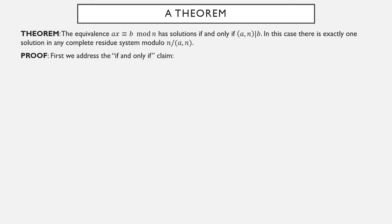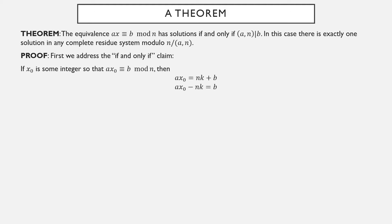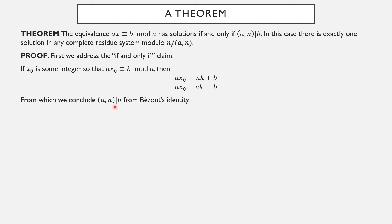Proof: let's address the if and only if claim. Suppose x₀ is some integer that solves the original equivalence. Then ax₀ ≡ b mod n, so it equals a multiple of n plus b. Subtracting to the other side gives a linear combination of a and n equal to b. From Bezout's identity, since the set of linear combinations of two numbers equals the set of multiples of the GCD, this linear combination of a and n must be a multiple of the GCD, so the GCD must be a factor of b.